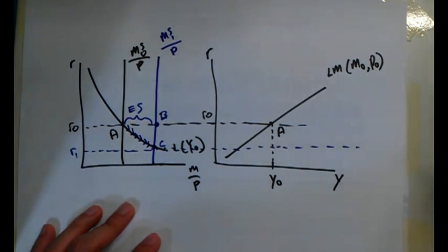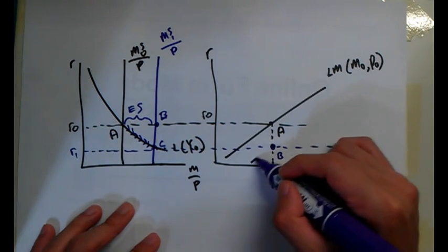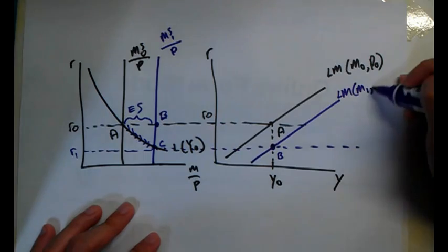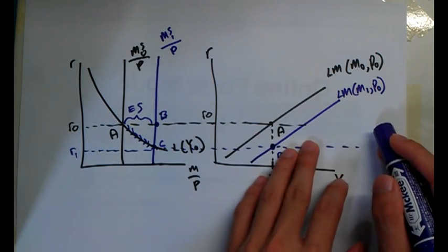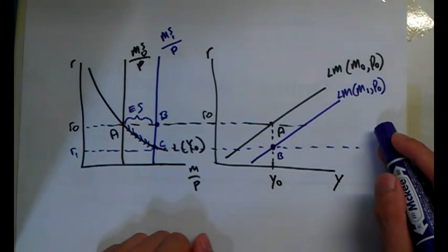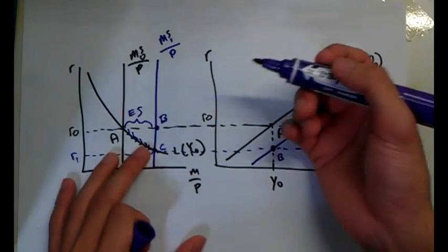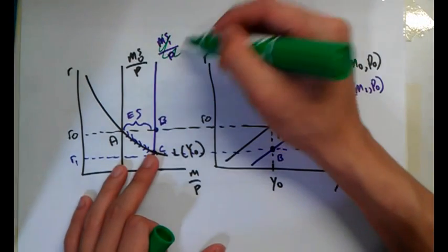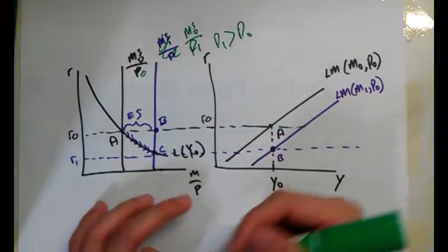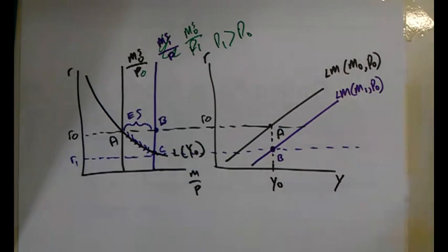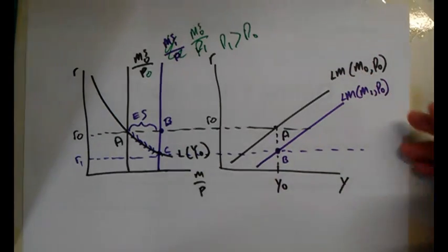Notice that income has not changed, so I should still be along the same vertical line on the LM diagram. But now I'm at a lower interest rate, which means my whole LM curve has actually shifted down — giving me LM(M1, P0). Similarly, what happens when the price level drops: the denominator P becomes smaller, so M/P becomes bigger, the money supply curve moves outward, and the LM curve shifts down. So when the money supply increases or prices drop, the LM curve shifts downward.